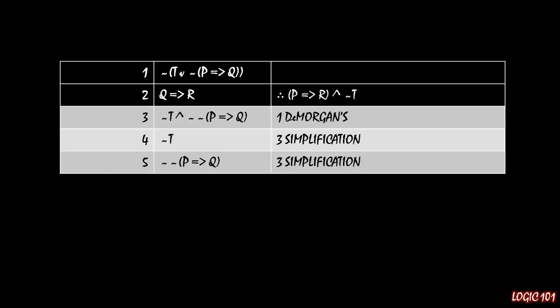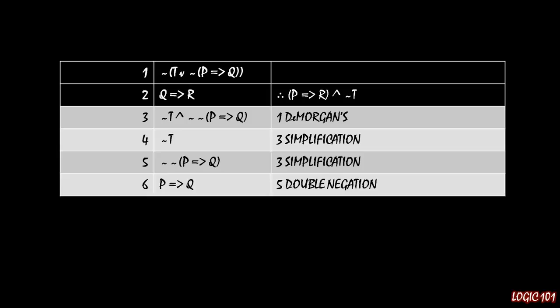And we can do the same thing to the second half of line 3. So we have NOT NOT P implies Q, and then of course NOT NOT, that's a double negation, so if we want to simplify line 5 a little bit more, we can get to P implies Q through double negation.